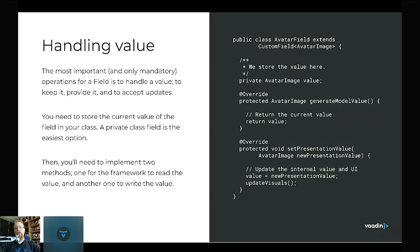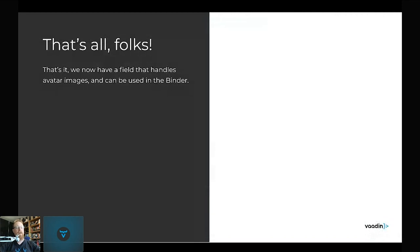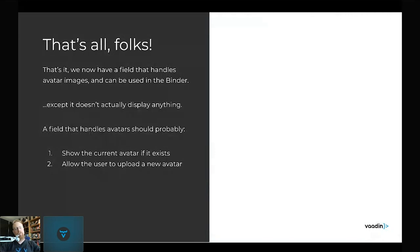Set presentation value is called when the framework wants to update the value — basically when calling set value on this field or binding through a binder. We take the new presentation value, store it, and call an update visuals method so the user can see the value changed. That's everything a custom field needs to do by contract — we can already use this code with the binder and it will work fully.